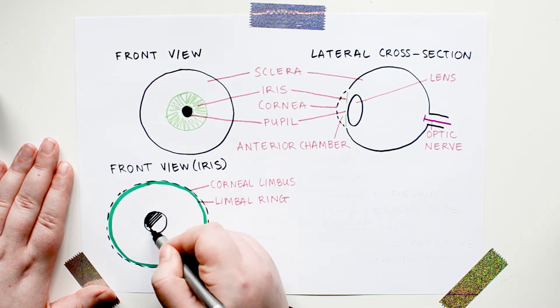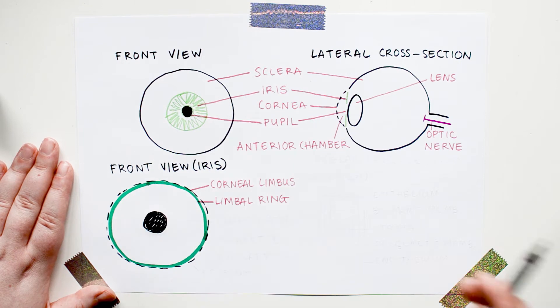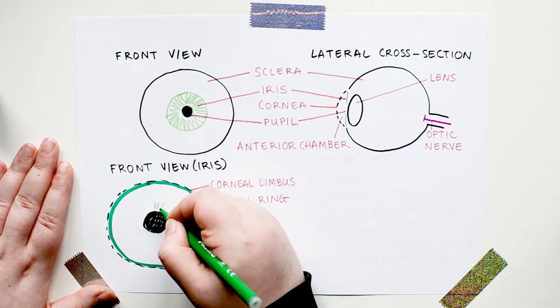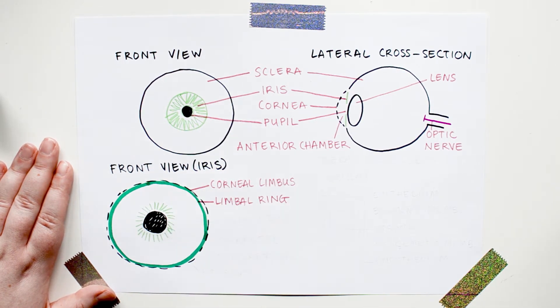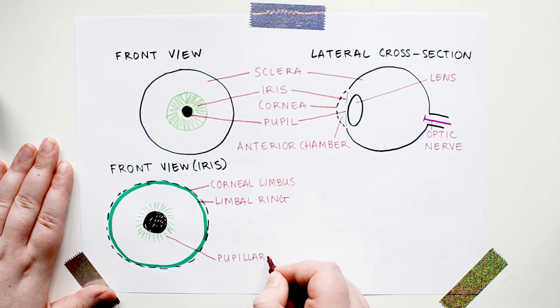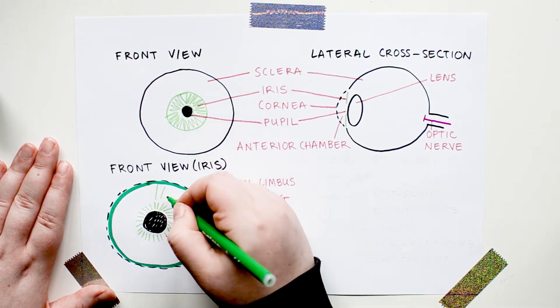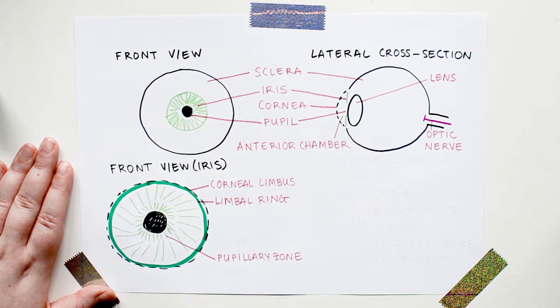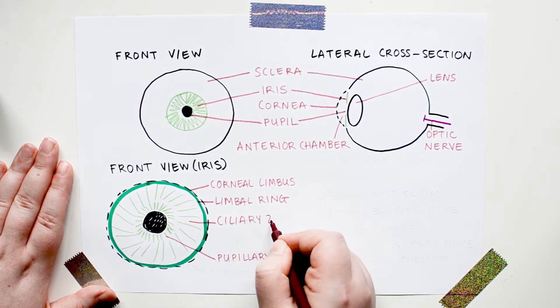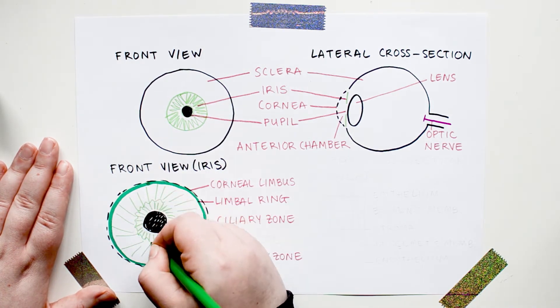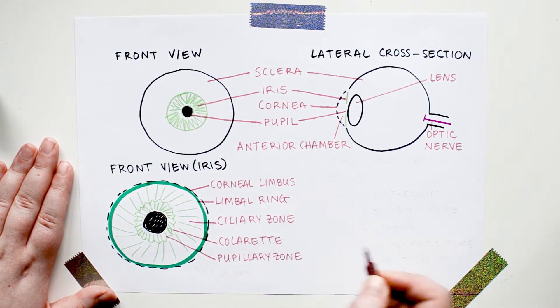Your iris is actually mostly made of muscle fibers, and there's two areas. The area closer to the pupil is called the pupillary zone, and the area further away from the pupil is called the ciliary zone. The pupillary zone and the ciliary zone meet and form an irregular ziggy-zaggy line called the colorette.